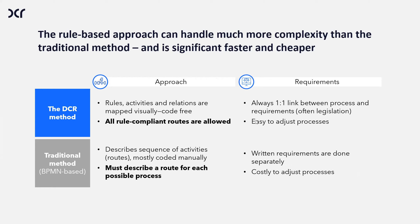Traditional BPMN-based models say everything not explicitly described is disallowed. I use a GPS analogy: if you have to drive from one city to another, Google Maps gives you a route, and any deviation — like stopping to put gas in the car — becomes an exception in BPMN terminology. If refueling the car is an exception, you have a bad model, because you can't call something an exception that happens weekly. That's part of life. You have to have flexible processes, because that's what people need in real life.